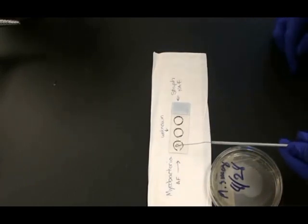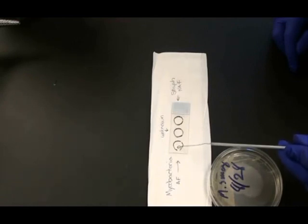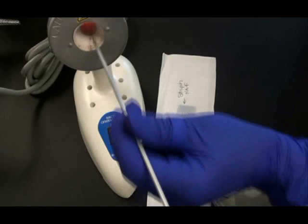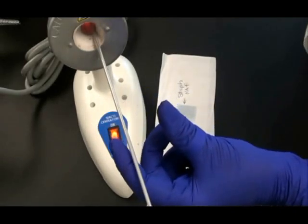Mycobacterium is waxy so it's going to be difficult to mix that into the water sample. You might get some chunks, so just take a little extra time to try and break that sample up and spread it evenly in that water droplet. Then I need to sterilize my loop. I do that between each step.